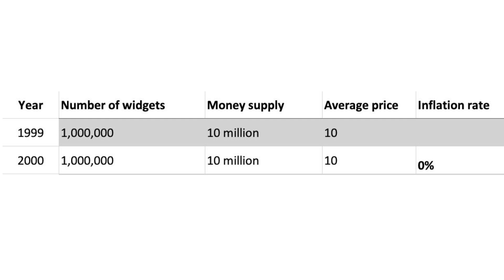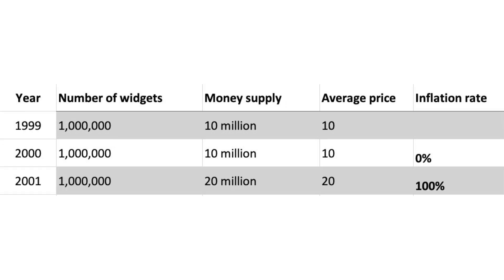Now if the next year there's the same number of widgets and the same money supply, the prices will stay the same, and the inflation rate will remain at zero. Now what about next year, 2001, when the money supply increases to £20 million.